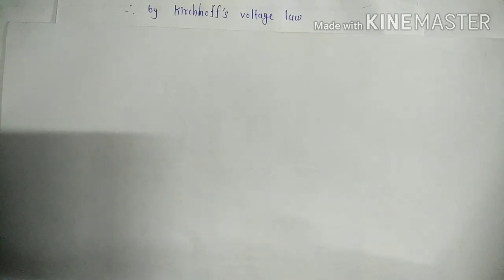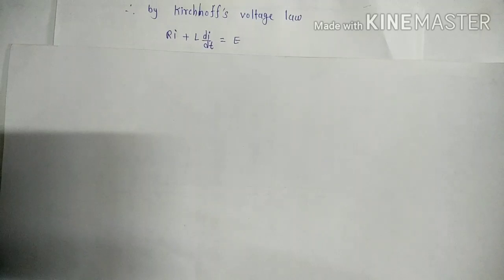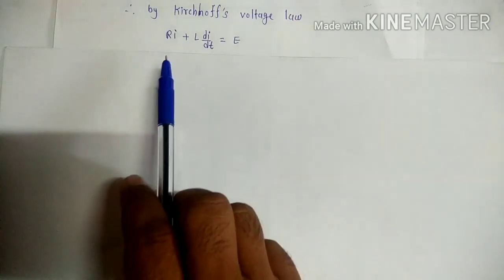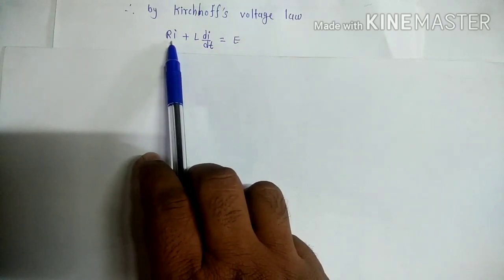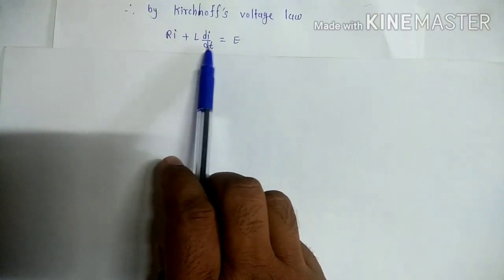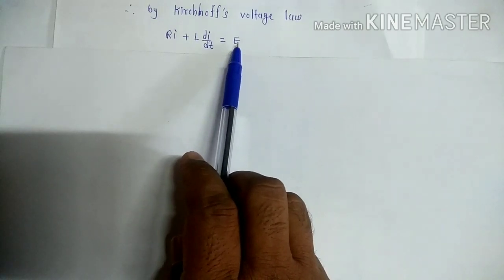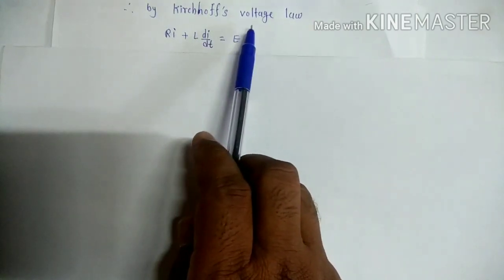By Kirchhoff's Voltage Law, the algebraic sum of voltage drops around the closed circuit is equal to the total electromotive force applied to that circuit. For this RL circuit, the voltage drop across resistance R is Ri, and the voltage drop across inductance L is L di/dt. The algebraic sum of these two equals the total EMF E applied to the circuit.